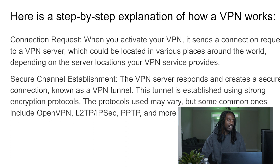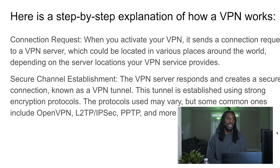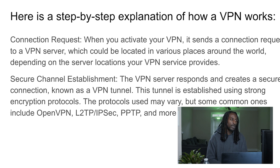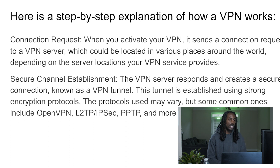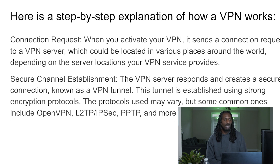Here's a step-by-step explanation of how the VPN works. It sets up a connection request — when you activate your VPN, it sends a connection request to a VPN server, which could be located in various places around the world depending on your VPN service's server locations. Next is secure channel establishment: the VPN server responds and creates a secure connection known as a VPN tunnel. This tunnel is established using strong encryption protocols. Some common ones include OpenVPN, L2TP, IPsec, PPTP, and most recently WireGuard.